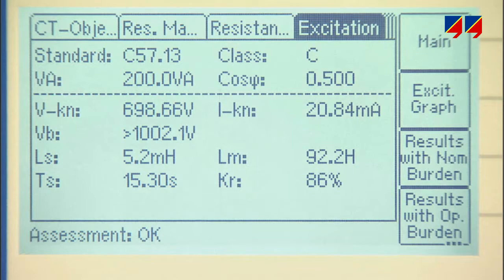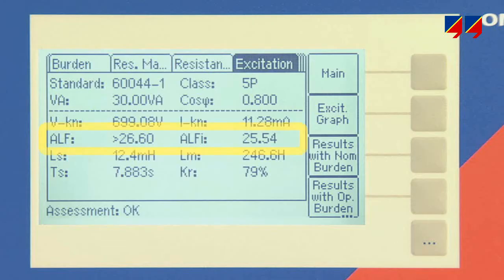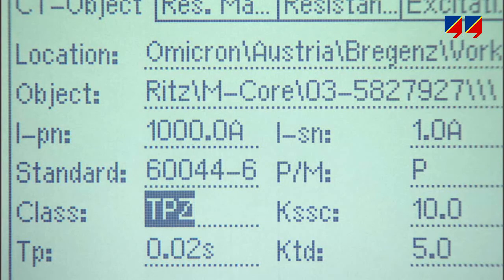For protection CTs, results include the terminal voltage, the accuracy limiting factor at the actual burden, and the parameters determining a CT's transient behavior.